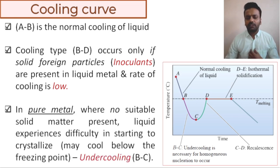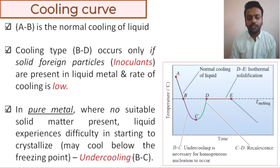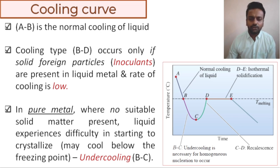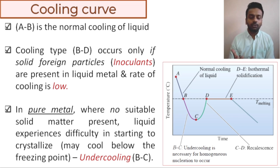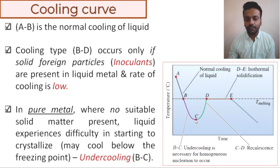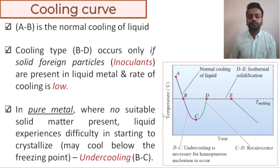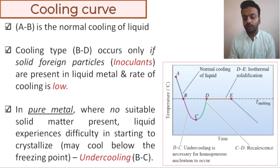If you have a theoretically pure material with no inoculants and no impurity, the liquid will experience great difficulty forming solid. The phenomenon known as undercooling will occur — the liquid will go to a temperature below the freezing point but still not form solid. The undercooling is mainly the difference between the equilibrium freezing temperature and the actual temperature of the liquid.